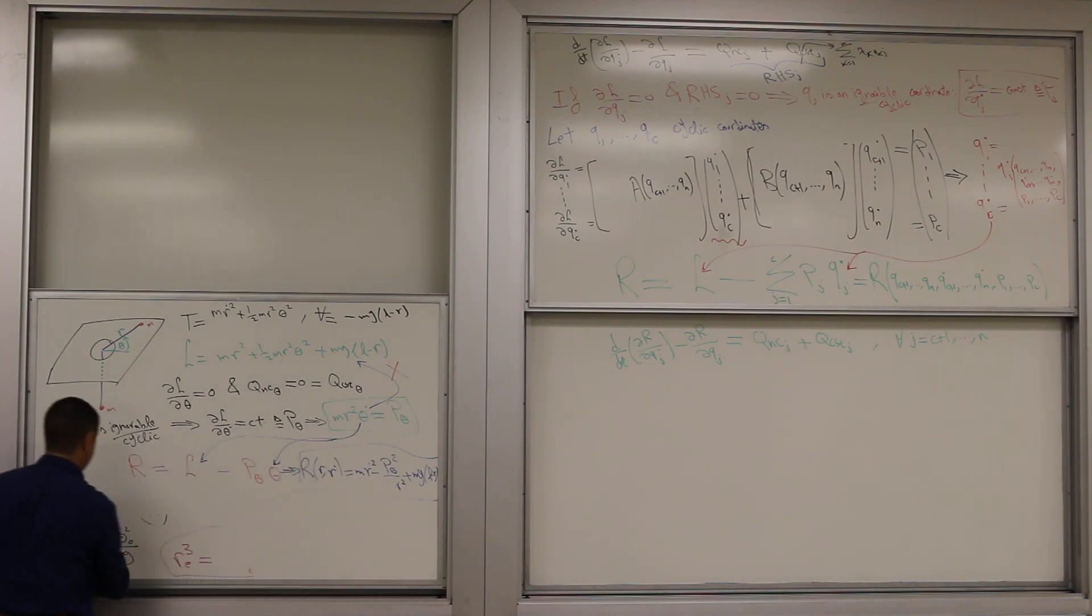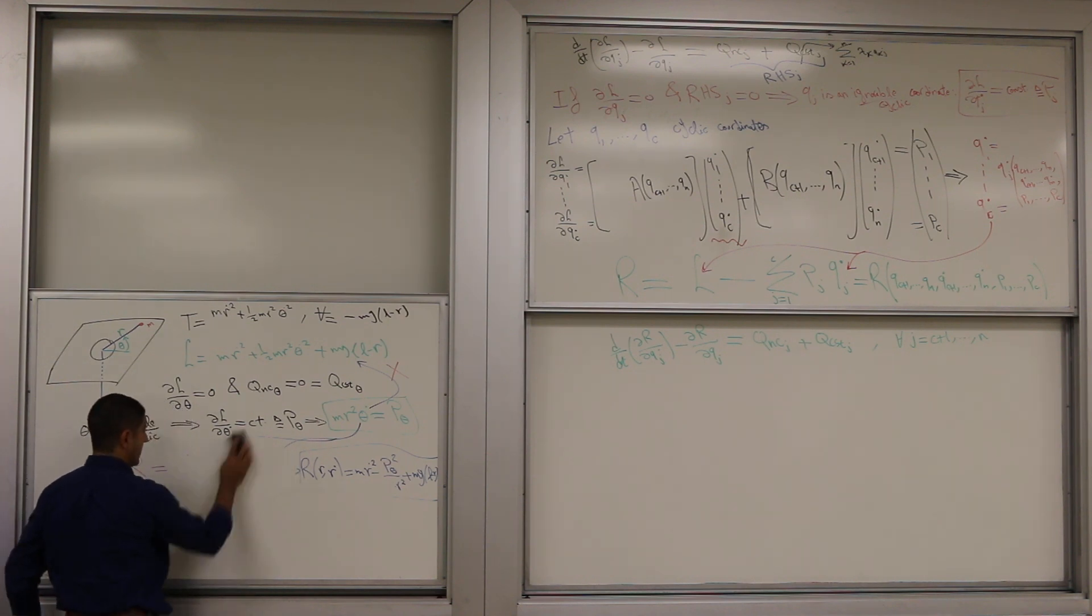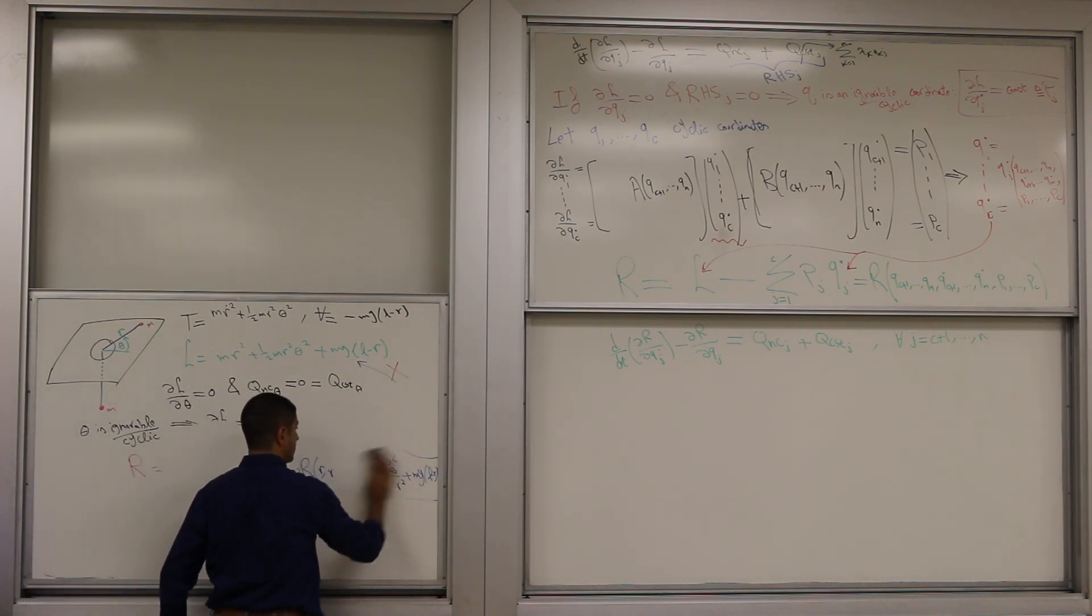We're going to do some rigid body now. How to do rigid body in Lagrangian mechanics? See what's the difference or what to add.